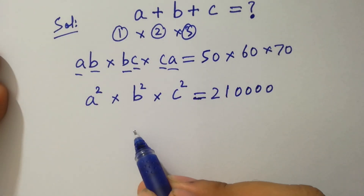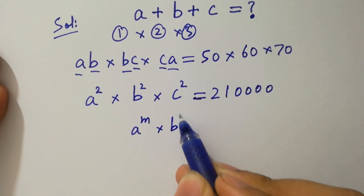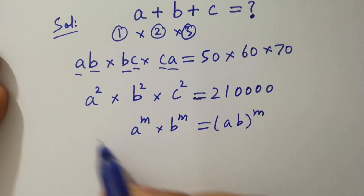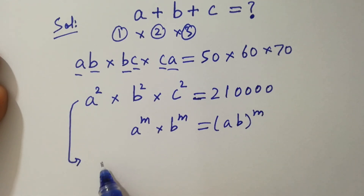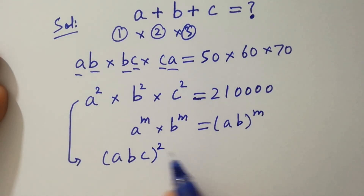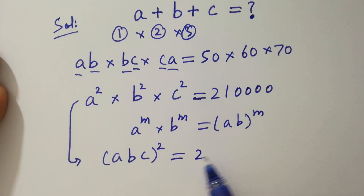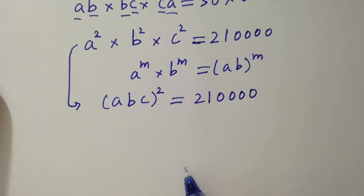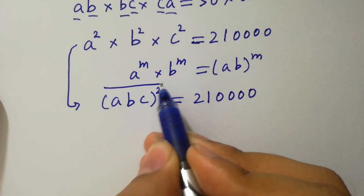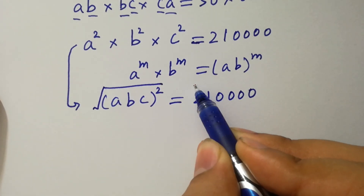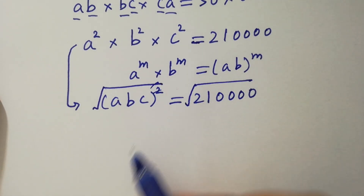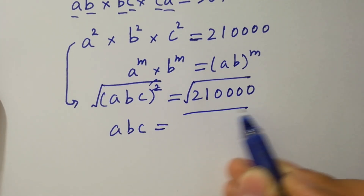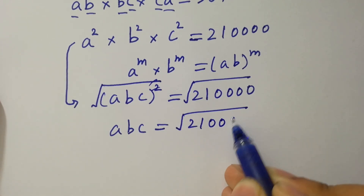Since a to the power m times b to the power m equals ab to the whole power m, then it will be (abc)² equal to 210,000. To simplify this, take the square root on both sides. The square cancels from the square root, giving abc equal to the square root of 210,000.